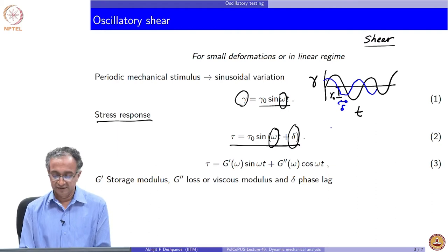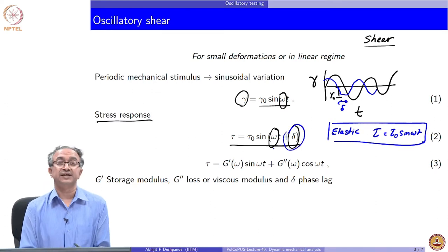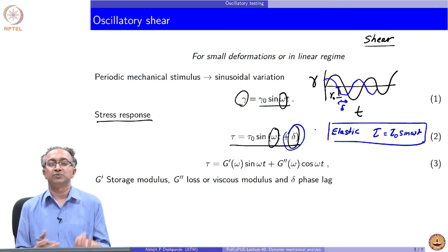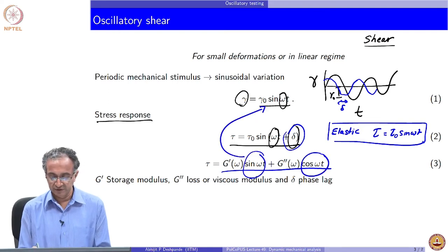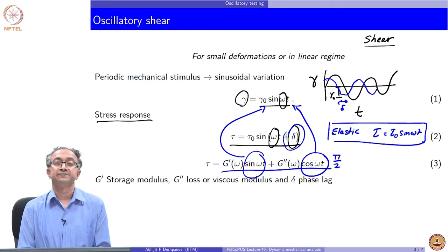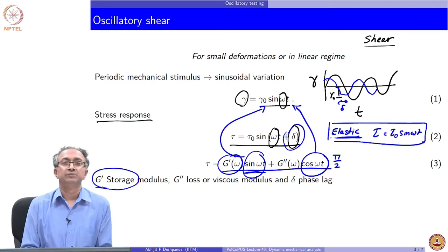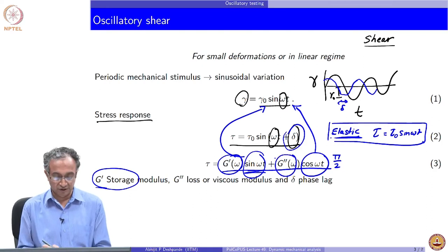If it is a perfectly elastic material, then tau equals tau naught sin(ωt), and there will not be any phase lag. Therefore, this phase lag is an indicator of the elastic and viscous contributions. Using standard trigonometric formulas for sin(A+B), you can split the overall stress into two parts: one in phase with strain and one 90 degrees out of phase. The coefficient signifying the in-phase response is called the storage modulus G', because elasticity implies energy storage, while G'' quantifies the viscous or loss-like contributions.